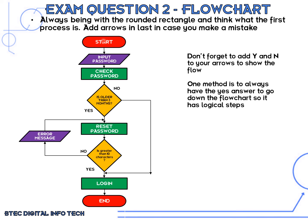Tracing through the flowchart: start, input the password, then check it. If it's not older than three months, follow the 'no' line straight to log in and the program ends. If the password is older than three months, follow the 'yes' path down to reset the password. Then we check whether the new password is greater than 10 characters. If it is, we log in and the program ends. If it's not, an error message appears and it loops back to reset the password again, repeating until more than 10 characters are entered.